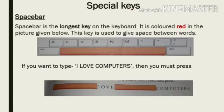Next are special keys. The first special key is the spacebar. The spacebar key is the longest key on the keyboard. It is colored red in the picture. This key is used to give space between words. For example, if you want to type 'I love computers', you must press the spacebar as shown in the picture.